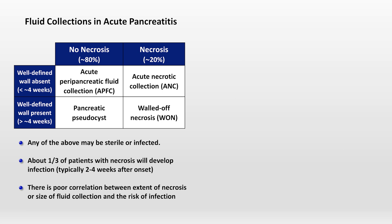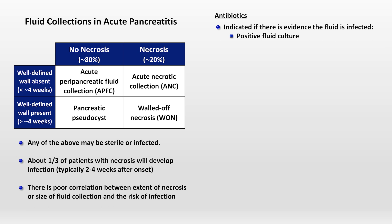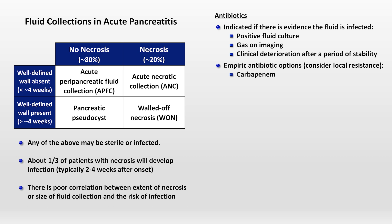So how do we treat these? There are two basic questions related to treatment: does the patient need antibiotics, and do we need to drain and/or debride the collection and/or necrosis? Antibiotics are indicated if there is evidence the fluid is infected. This evidence can include a positive culture if the fluid is aspirated — which is not routinely done due to the risk of introducing infection — gas within the collection seen on imaging, or clinical deterioration after a period of stability. If antibiotics are started, common empiric options include a carbapenem or the combination of cefepime and metronidazole, but consider your hospital's local resistance patterns.